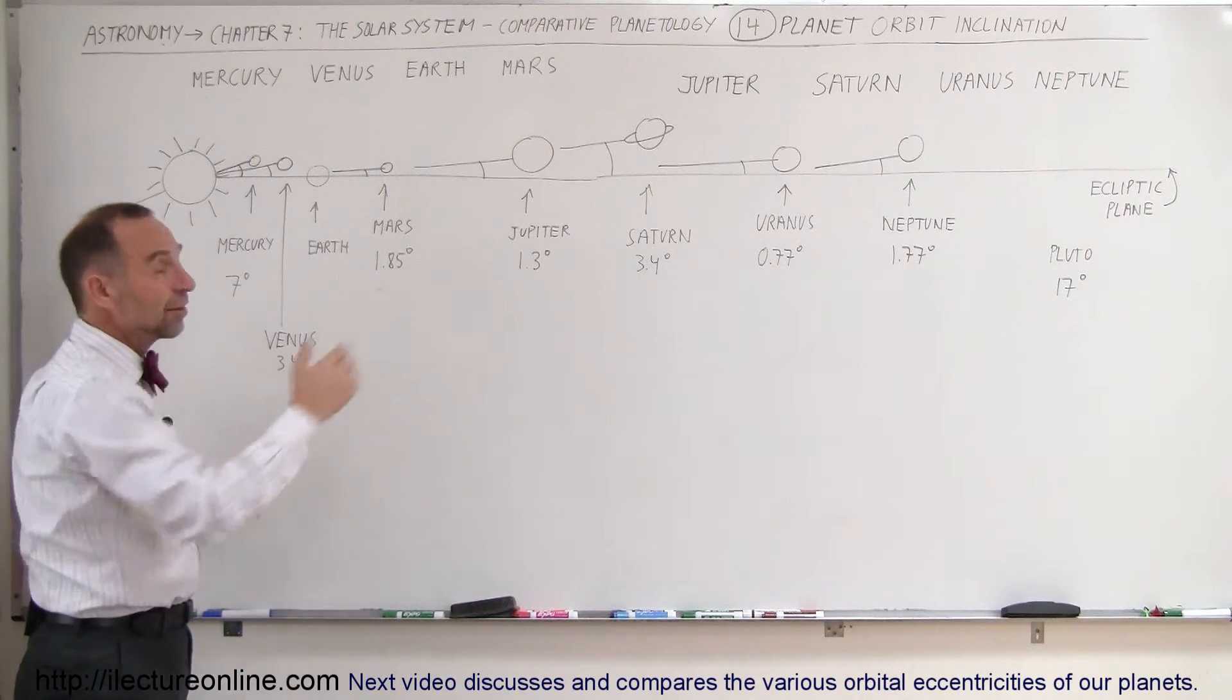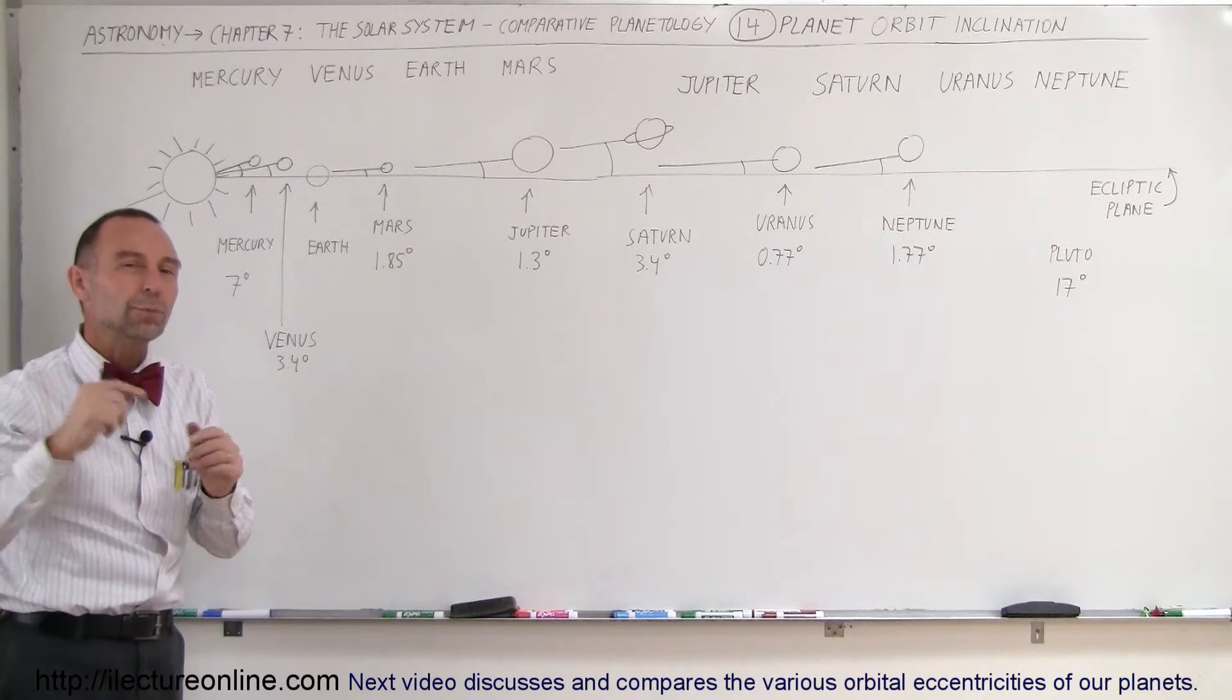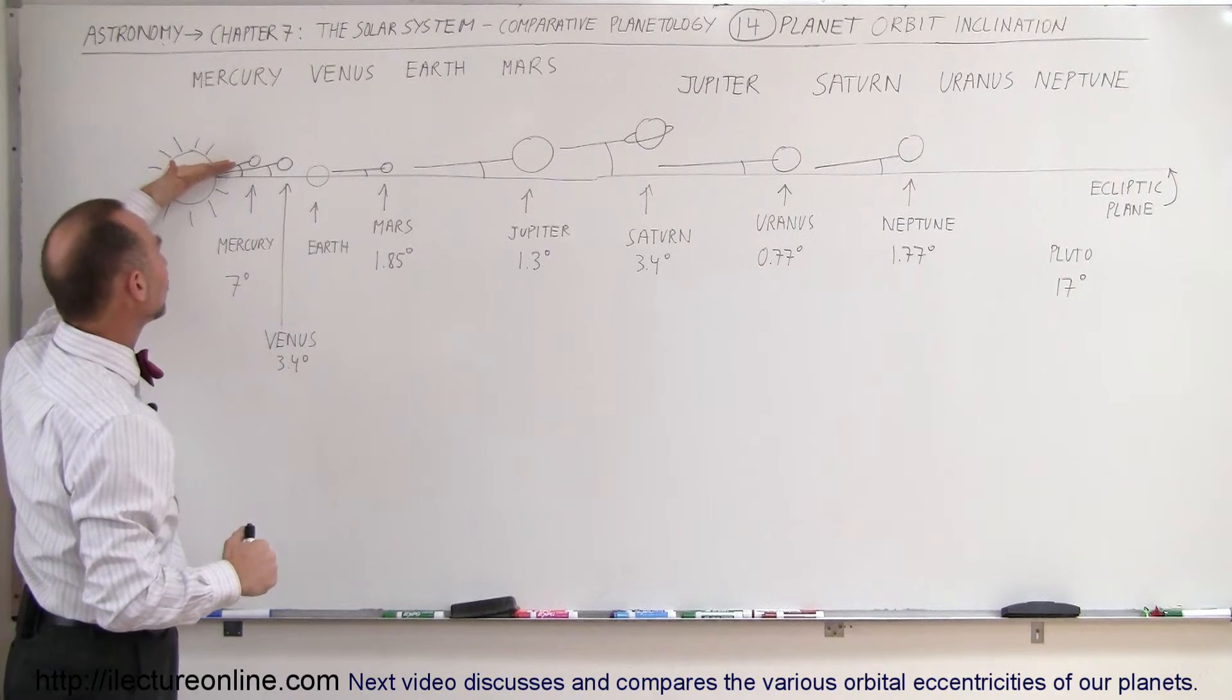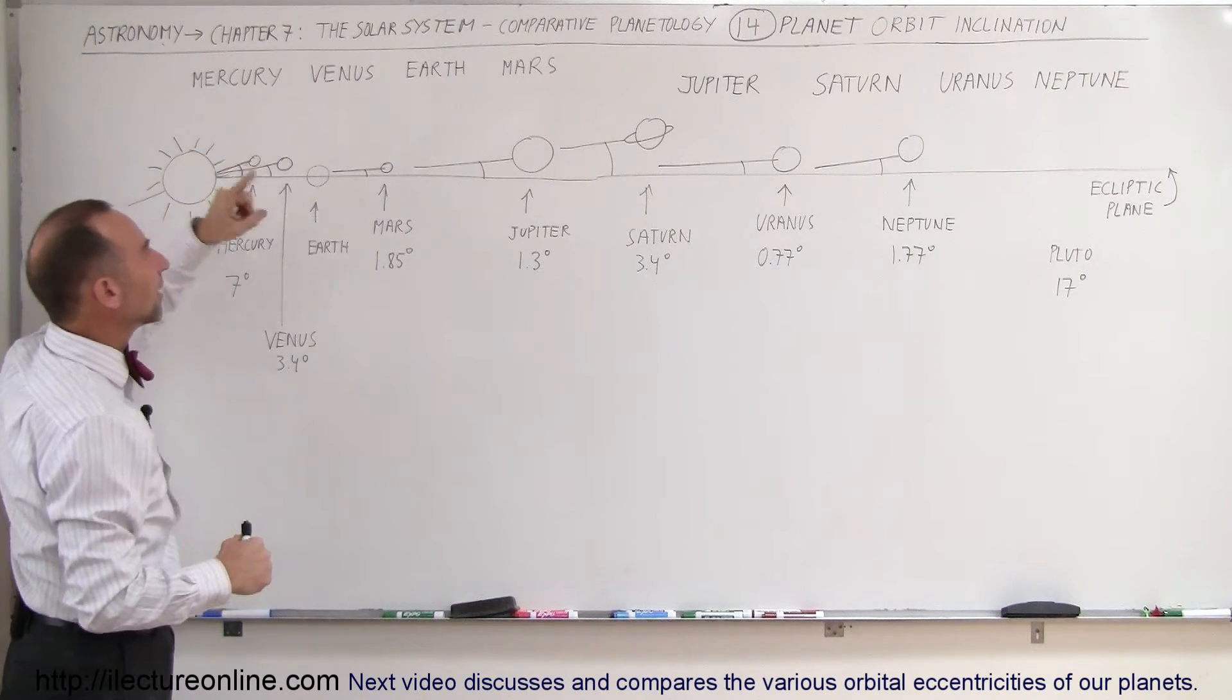Mercury varies the most from all the planets in the solar system from that orbit plane of the Earth, from the ecliptic. So the orbital tilt or orbital inclination from Mercury to the ecliptic is 7 degrees.